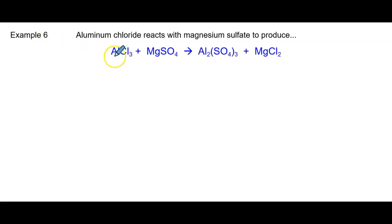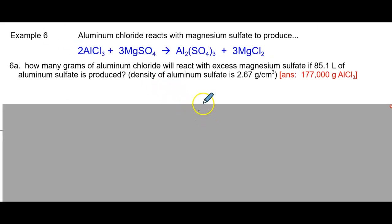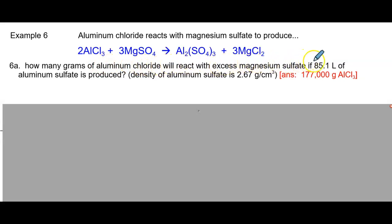Welcome back. Here's the equation — make sure you've balanced it. Here's the equation balanced. We're going to start with how many grams of aluminum chloride will react with excess magnesium sulfate if 85.1 liters of aluminum sulfate is produced. We have a density.